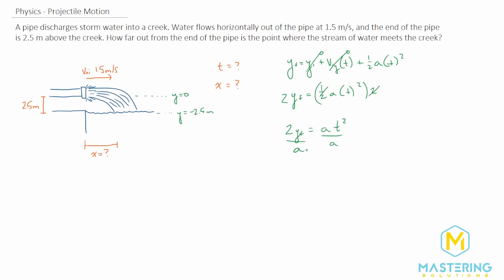Divide both sides by acceleration. So t squared equals 2 times y final divided by acceleration. We'll take the square root of both sides. So we have t equals the square root of 2 times the y final divided by acceleration.